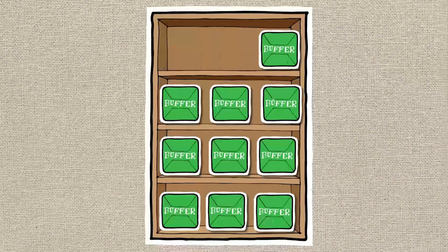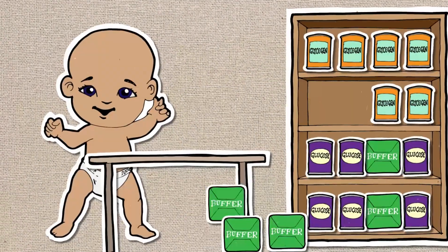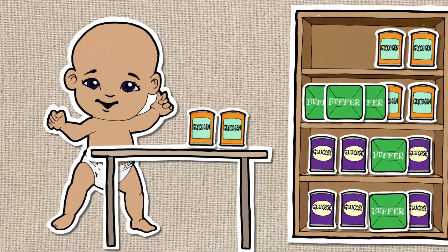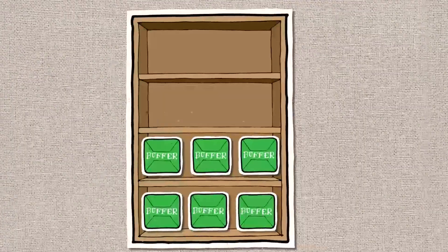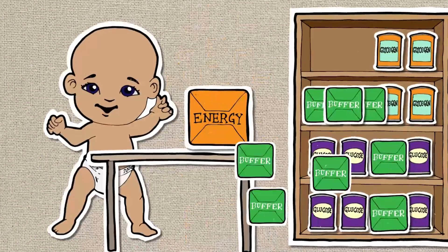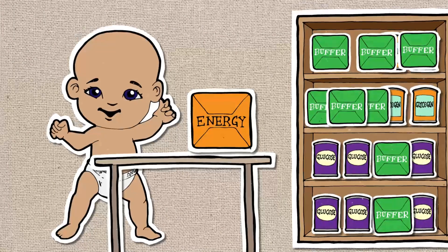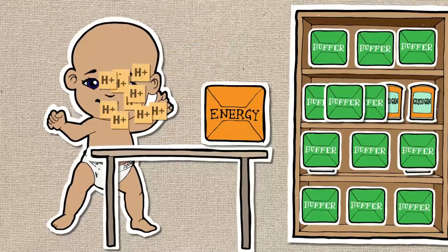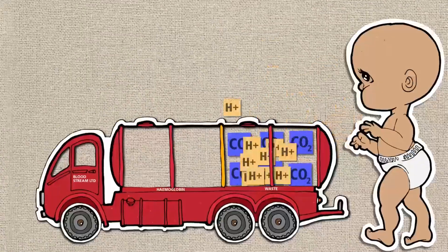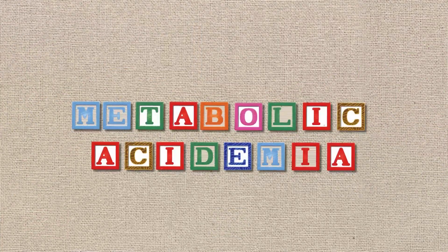As there are more hydrogen ions produced, more buffers are needed to prevent them affecting the pH of the blood. Prolonged anaerobic metabolism continues to produce larger quantities of hydrogen ions, meaning the buffer stores are used up quicker. Eventually buffers will be used up, and at this point the hydrogen ions are left unbuffered in the fetal circulation and will begin to cause the pH of the blood to drop. This is known as metabolic acidemia.